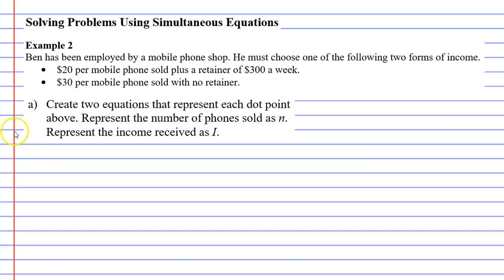In this video, we're going to complete example two. It says that Ben has been employed by a mobile phone shop, and he must choose one of the following two forms of income. Either he can receive $20 per mobile phone that he sells, plus a retainer of $300 a week, or he can receive $30 per mobile phone sold with no retainer.